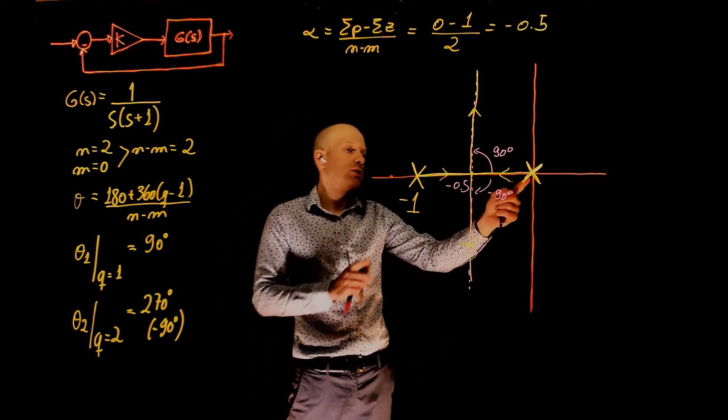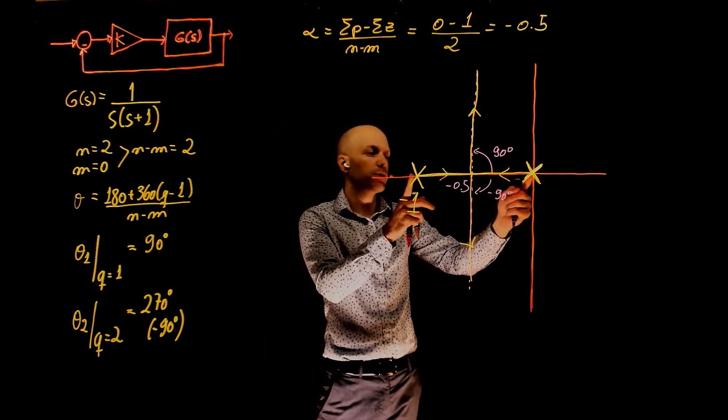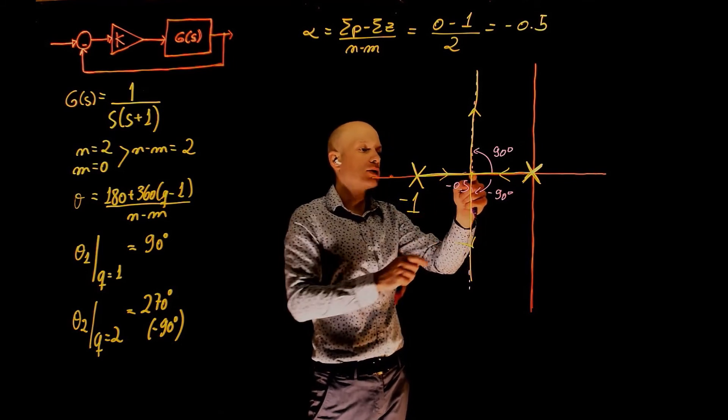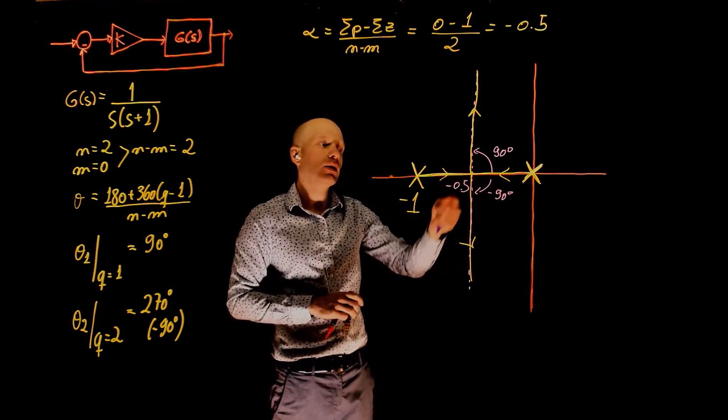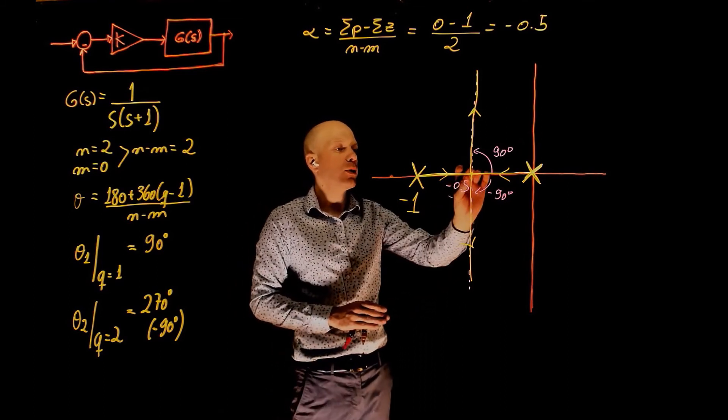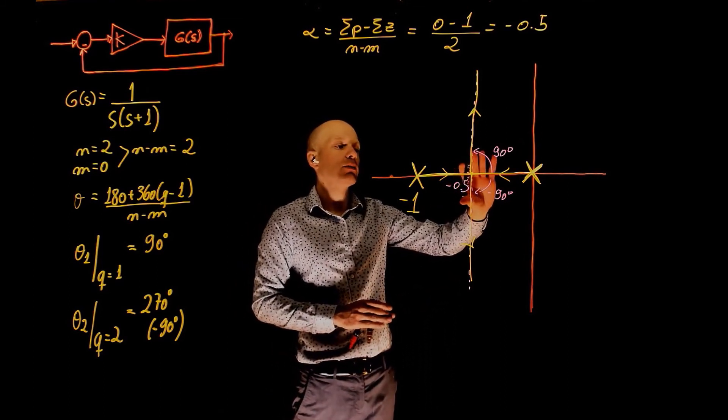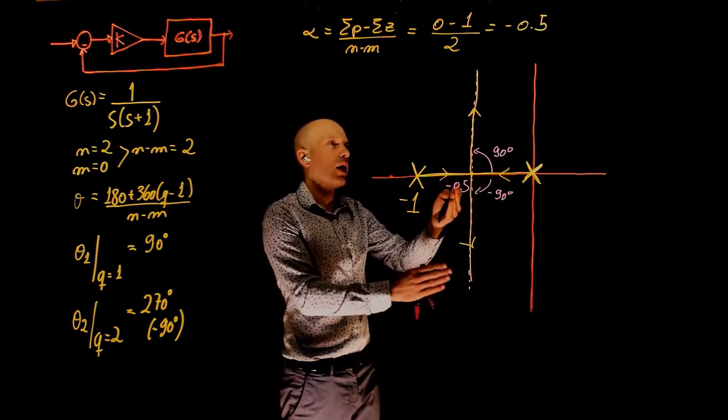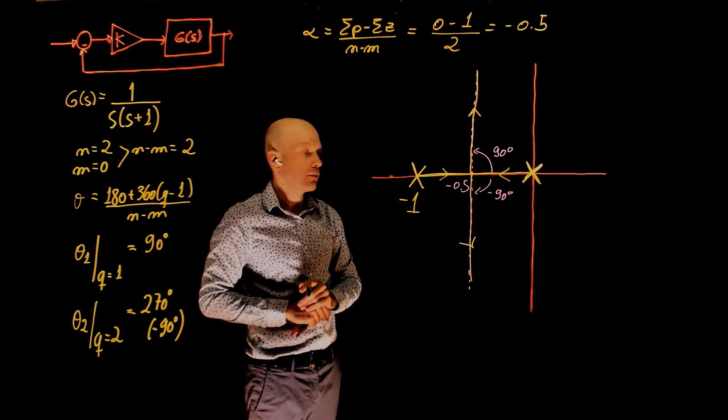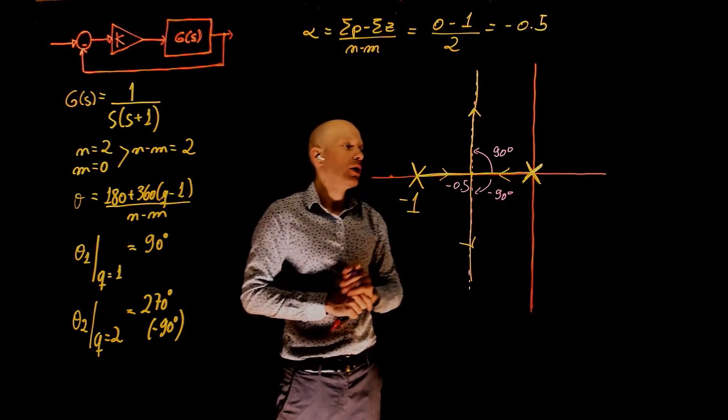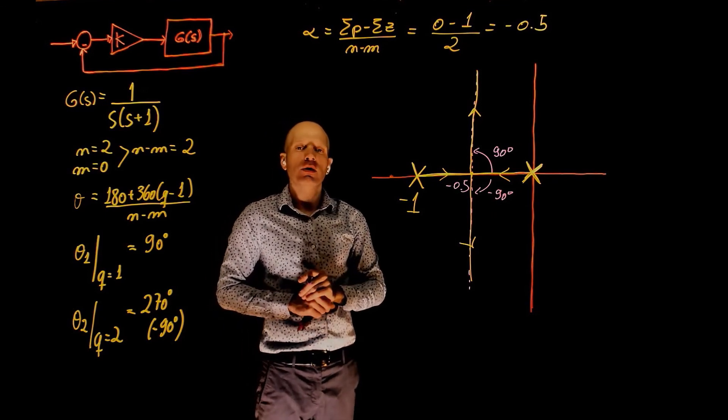You can see that our system is initially overdamped because all poles are real. The poles will become one here at this point. The system is then critically damped and as k keeps increasing, they break away from the real axis. The system becomes underdamped because you now have complex conjugates as poles and they tend to plus minus infinity. The system is always stable because you're never crossing into the unstable region of the complex plane.